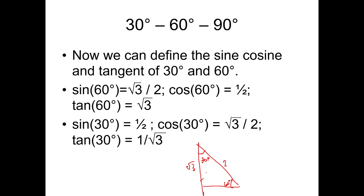To find the adjacent side, we can use sine. Sine 60 degrees is equal to opposite, which is the square root of 3, over 2. That leaves us 2 times sine 60 degrees equals the square root of 3. Then you can now find the value of x.